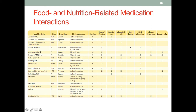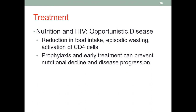Here we see some of the drugs along with their nutrition-related interactions. When we talk about opportunistic disease associated with HIV, we need to know that many of these conditions can lead to a reduction in food intake. Depending on whether they are well-managed or in an acute state, they may have episodic wasting — their weight may go up, then down, then recover again. We have some medications that can prevent nutritional decline in these conditions.